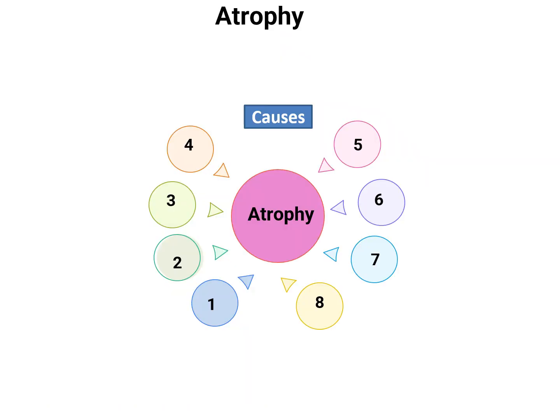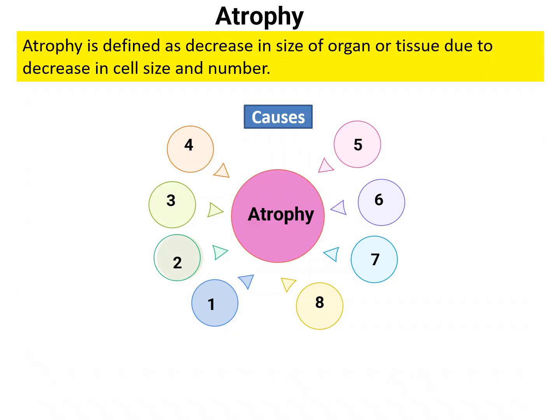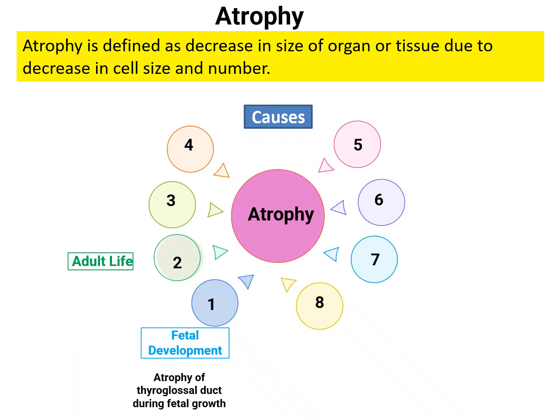The next cellular adaptation is atrophy. Atrophy is defined as a decrease in the size of an organ or tissue due to decrease in cell size and number. During fetal development there is atrophy of the thyroglossal duct. Another example — in fetal life or childhood you will see the thymus, but once we grow into adults, the thymus is no longer present. It got atrophied.